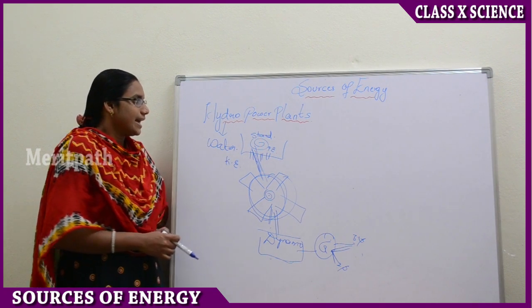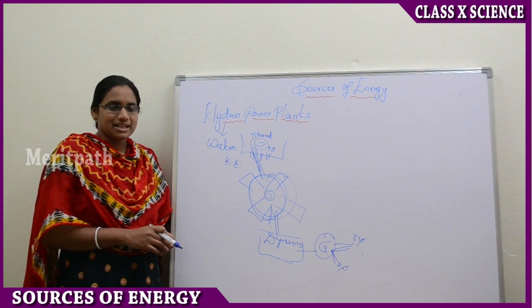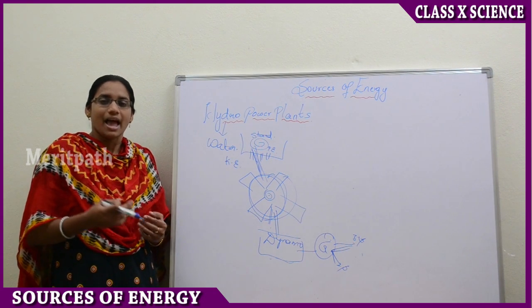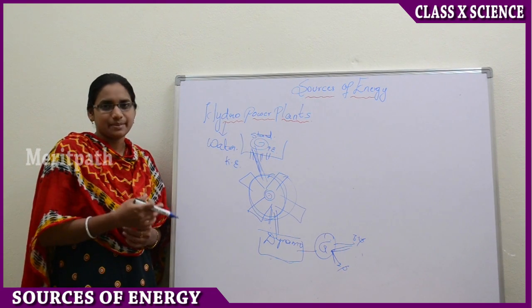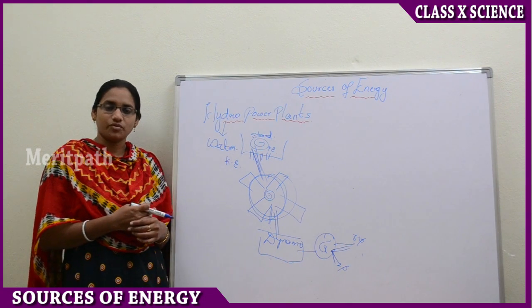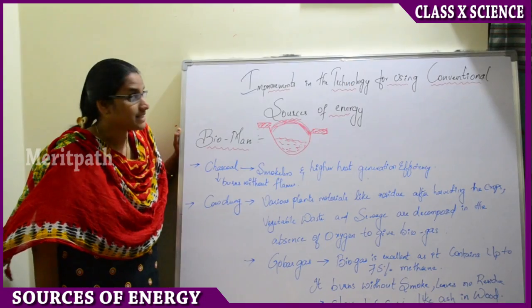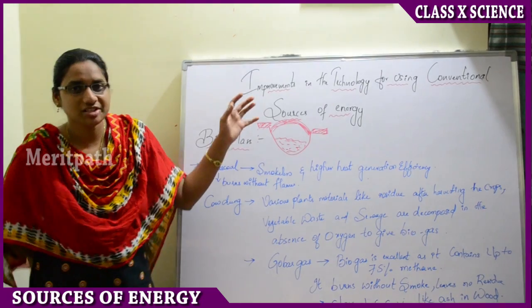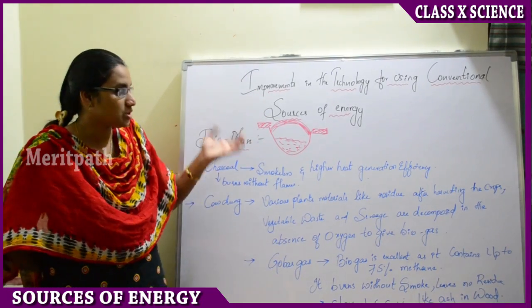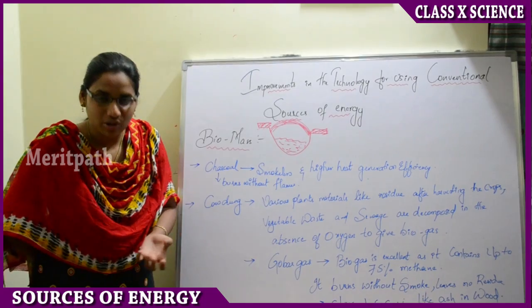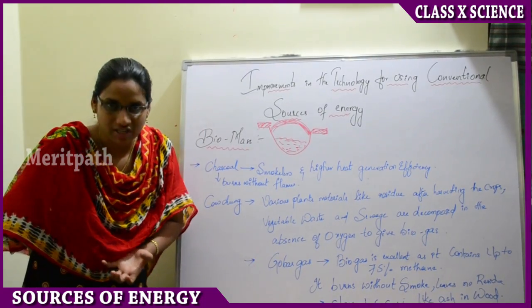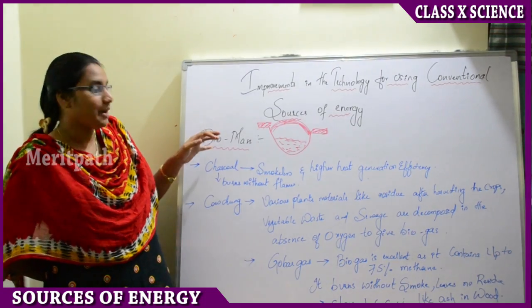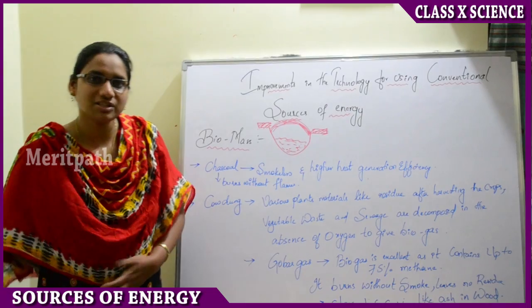Now let us see other power plants and find out renewable and non-renewable resources of energy, such as nuclear power plants. Let us also see the improvements in technology for using conventional resources of energy — that is, resources which are renewable, having less pollution and greater efficiency. Let us see whether biomass is a conventional source of energy or not.